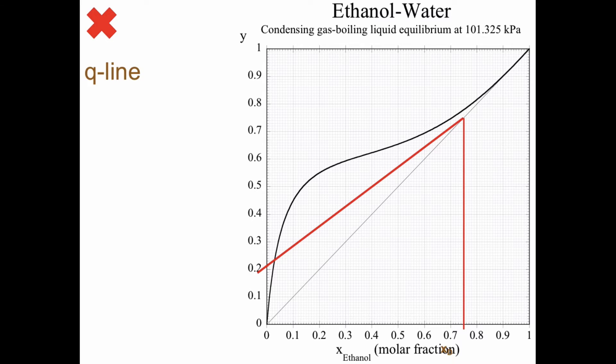Time for the q line. zF equals 0.2, so we find the point on the diagonal there. And then the slope we need q for, and that's 0.75, and the slope is q divided by q minus 1, and we get minus 3 as the slope. So one step left should be three steps up, so that's a line like that.